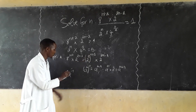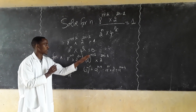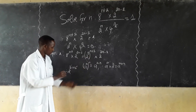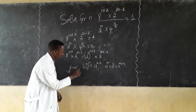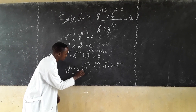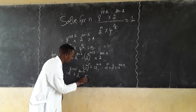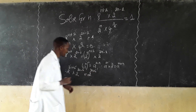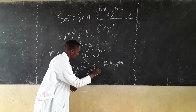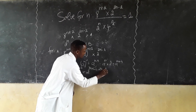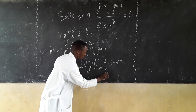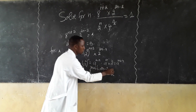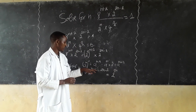Combining the exponents: we have 3n plus 6 from the first term, and 2n minus 2 from the second term. Adding these together gives us 2 power 3n plus 6 plus 2n minus 2, which simplifies to 2 power 5n plus 4.